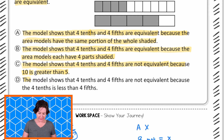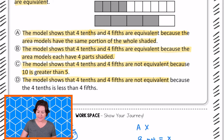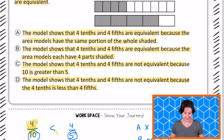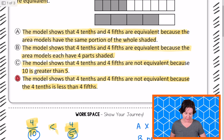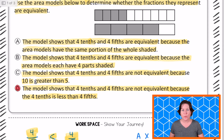And then D — the model shows that 4 tenths and 4 fifths are not equivalent because 4 tenths is less than 4 fifths. 4 tenths is less than 4 fifths. That one looks really good, that one makes sense. So we can go ahead and choose D. All right, there we go — that's how you solve this one.